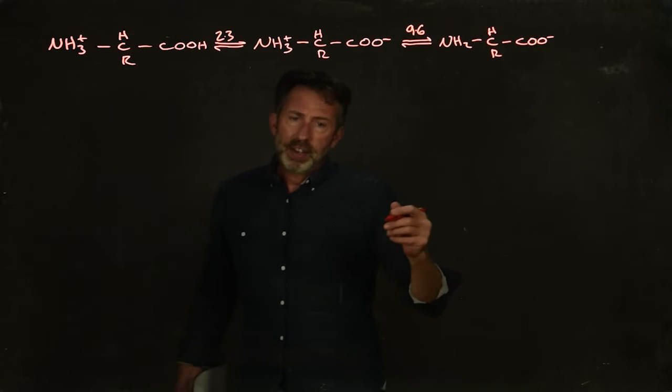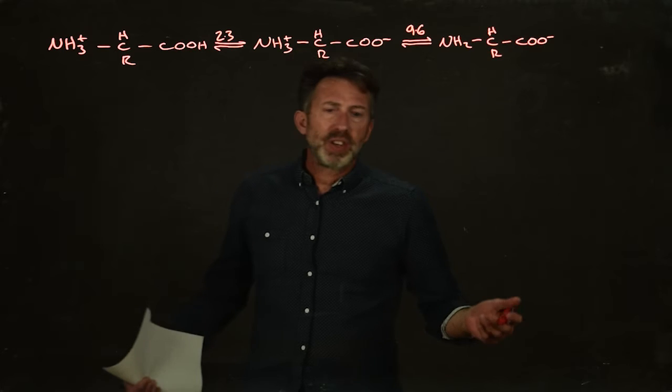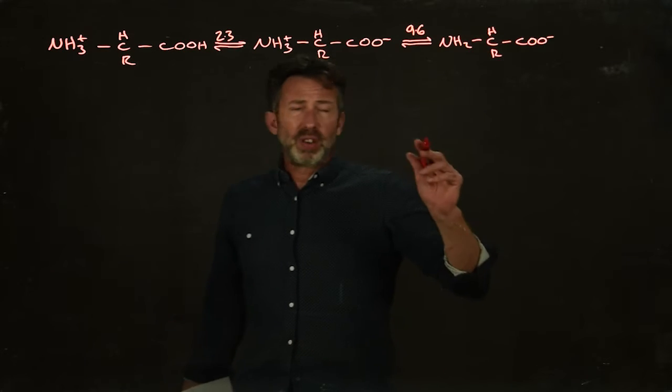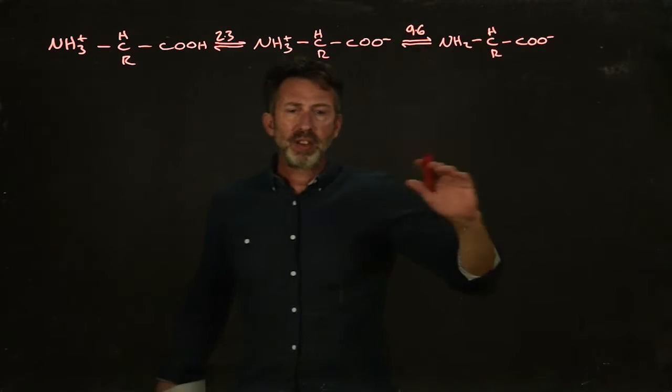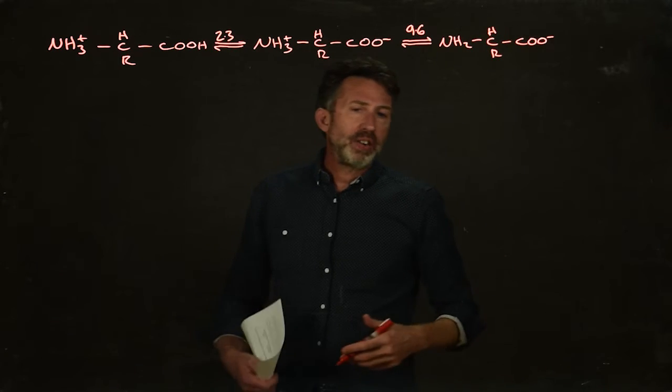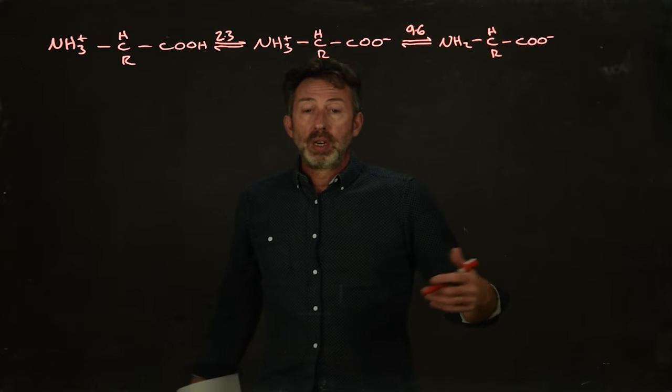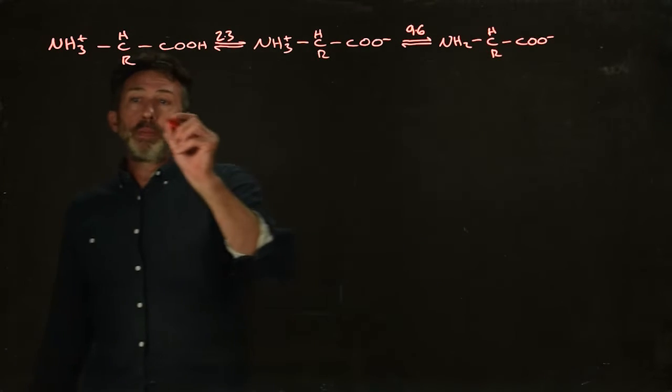Let's imagine what would happen if we had a solution of this amino acid. Let's keep it simple and call it glycine. For glycine, the R group is simply a proton—it's simply H. That's the simplest amino acid you can get. Let's say we've got a solution of glycine and we added some sodium hydroxide to it. What would happen to the pH? Well, let's put some numbers in.